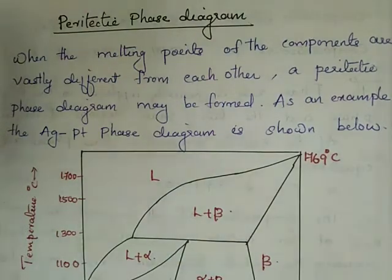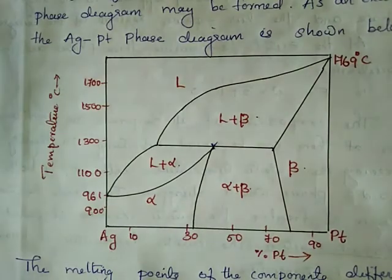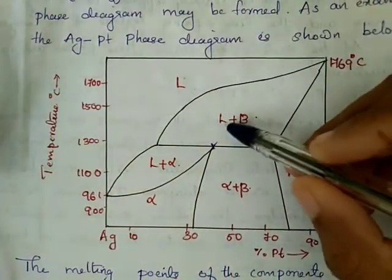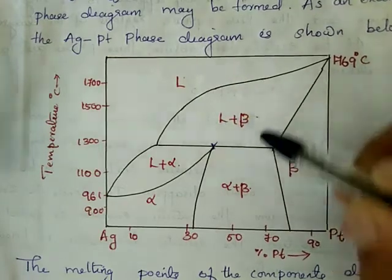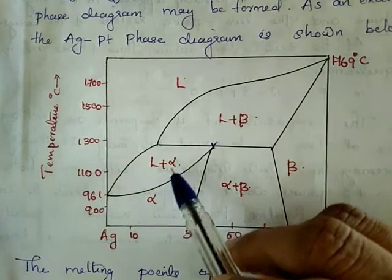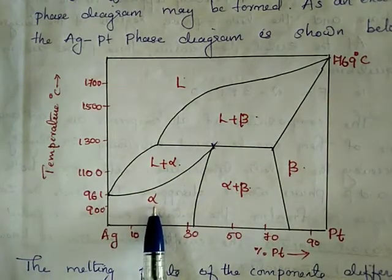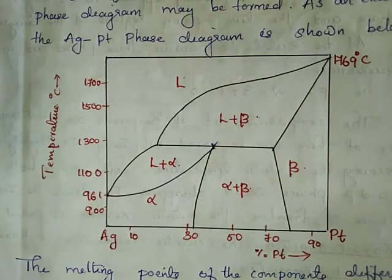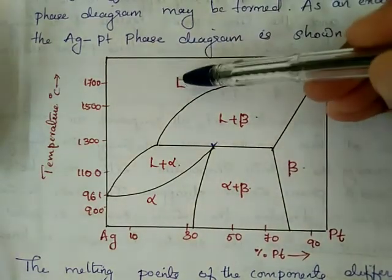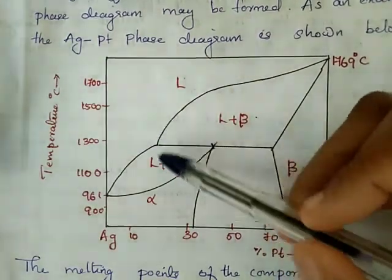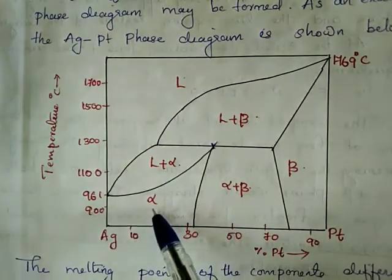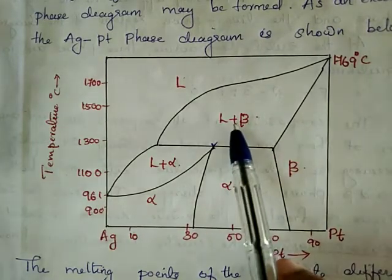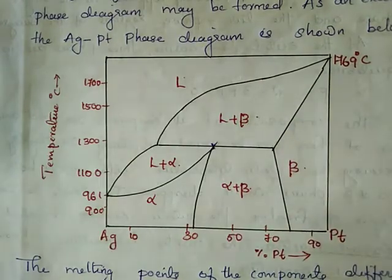The phase diagram of silver-platinum is shown here. The different phases marked are: the liquid phase, liquid plus solid phase (L plus beta), L plus alpha (liquid plus solid phase), the alpha phase (solid phase), beta, and finally completely solid as alpha plus beta. The phase boundary lines separate: L and L plus beta, L and L plus alpha, L plus alpha and alpha, alpha plus beta and alpha, alpha plus beta and beta, and L plus beta and beta.